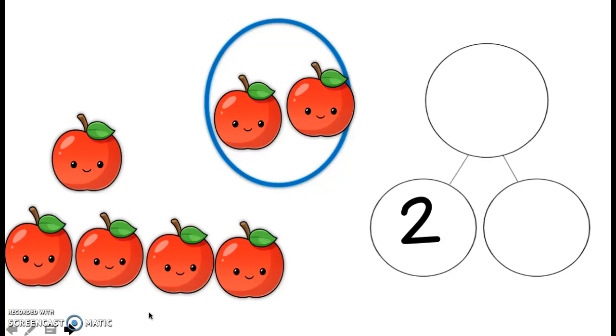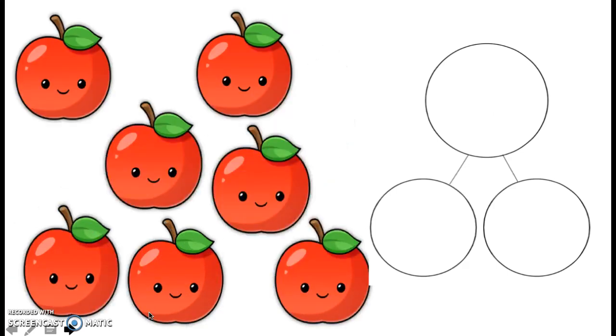What goes in the circle right next to the two that shows the other part? It's going to be the rest of the apples. So there's one, two, three, four, five. Five is going to go into that other part. Now the big circle at the top is going to be the whole amount. If I have five and I count up two, I would say five, six, seven. So seven is my whole amount. Perfecto. We are doing such a good job at this learning, girlfriend.